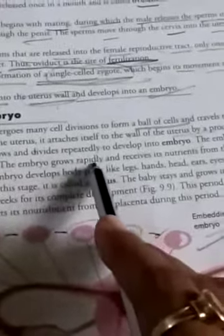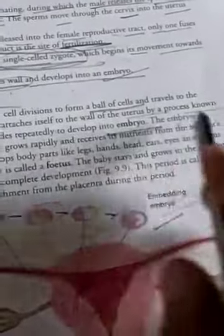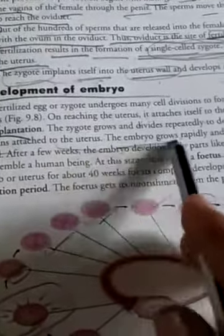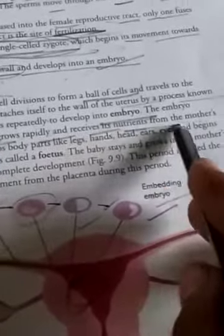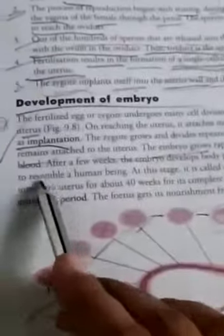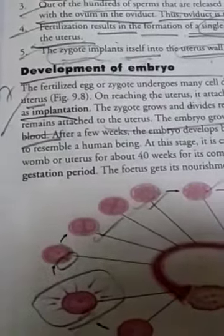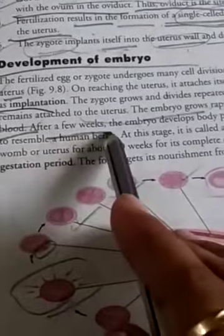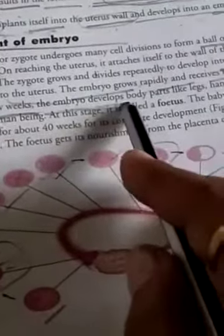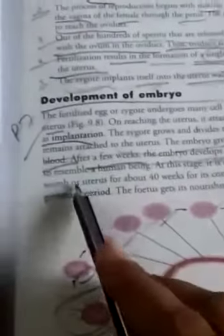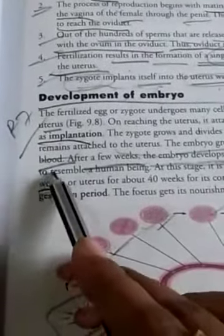The zygote grows and divides repeatedly to develop into an embryo. The embryo remains attached to the uterus and grows rapidly, receiving its nutrition from the mother's blood. After a few weeks, the embryo develops body parts like legs, hands, head, ears, and eyes.